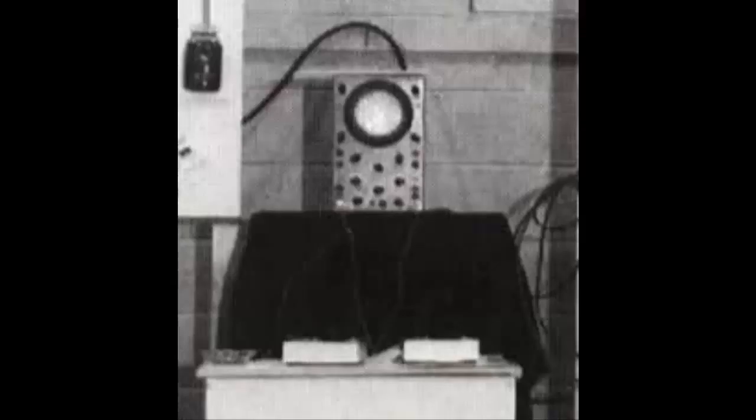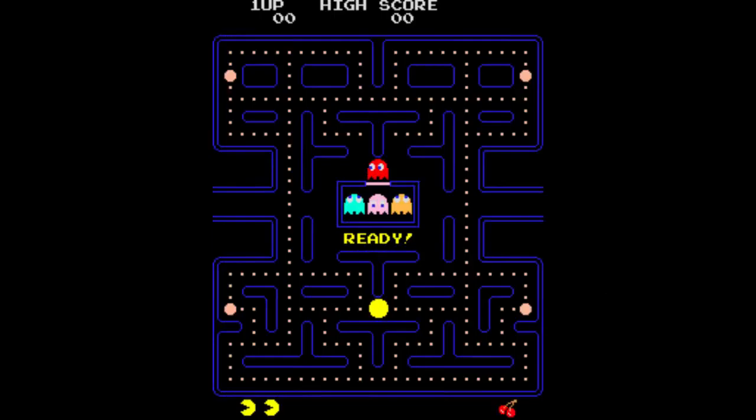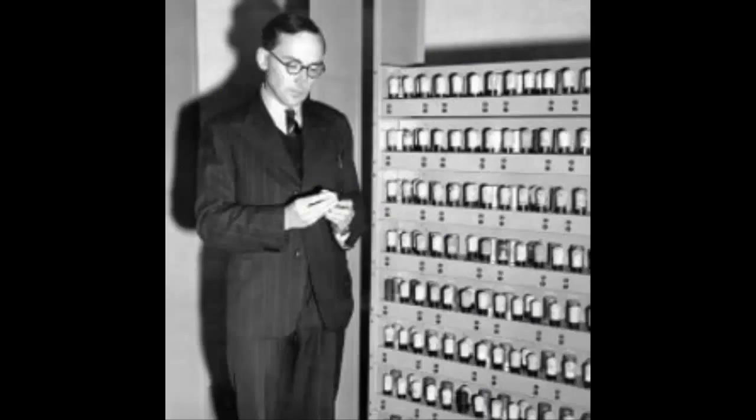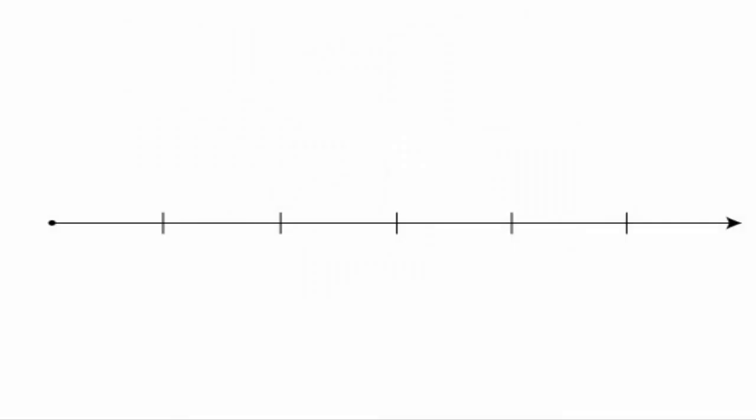When asked what the first video game was, many replied Pong. Some people even replied saying Pac-Man was the first video game. But they're incorrect. OXO and Tennis for Two are the reason both of those games were made. Pong was made 20 years after OXO, and Pac-Man was made 28 years after.